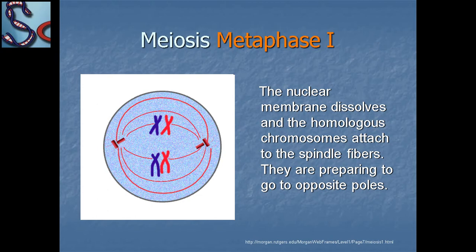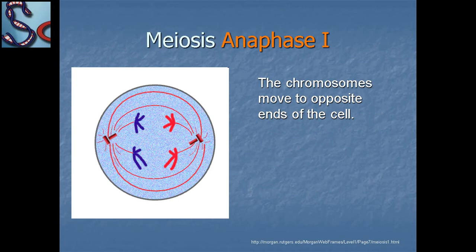In metaphase one, the nuclear membrane dissolves and the homologous chromosomes attach to the spindle fibers, preparing to move to opposite poles. In anaphase one, the chromosomes move to the opposite ends of the cell.